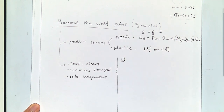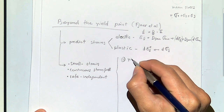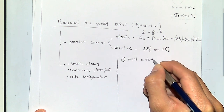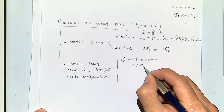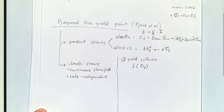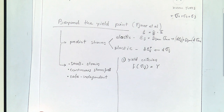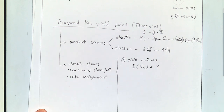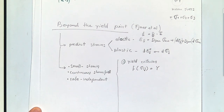The first of the five things we need is something we already have — good news — and that's a yield criterion. The yield criterion is basically an equation: a function of σ_ij such that when you get to yield, that function equals a constant. This could be any of the yield criteria we've seen so far: Mohr-Coulomb, Drucker-Prager, Tresca.